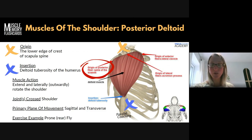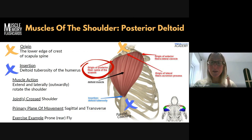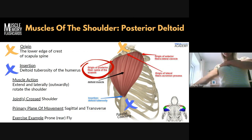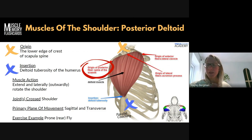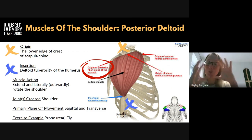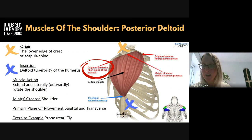The posterior deltoid produces extension of the shoulder — the reverse of flexion — bringing your arms back down next to your body or behind you. It also produces lateral rotation, turning the shoulder outward at the joint. Remember, these are exactly opposite to the anterior deltoid; they are agonist-antagonistic even though they're in the same muscle group, which is quite rare. One does flexion at the front, one extends the shoulder at the back. The primary planar movements are the same planes as the anterior — sagittal for extension, and transverse for lateral or external rotation.